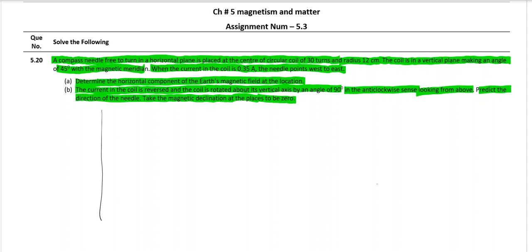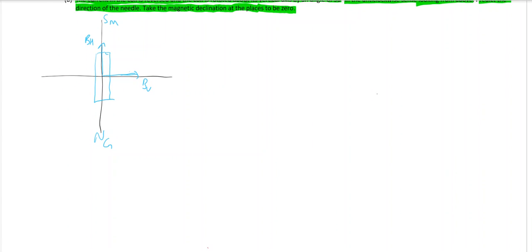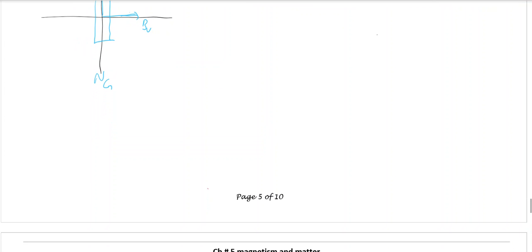So first, let us place the magnetic needle. Instead of a magnetic needle, I will draw a magnet only. Initially this is how the magnet is placed. Let this be magnetic south and let this be magnetic north. So I can say that this is the horizontal component of Earth's magnetic field and this is the vertical component, which happens to be zero in this case.